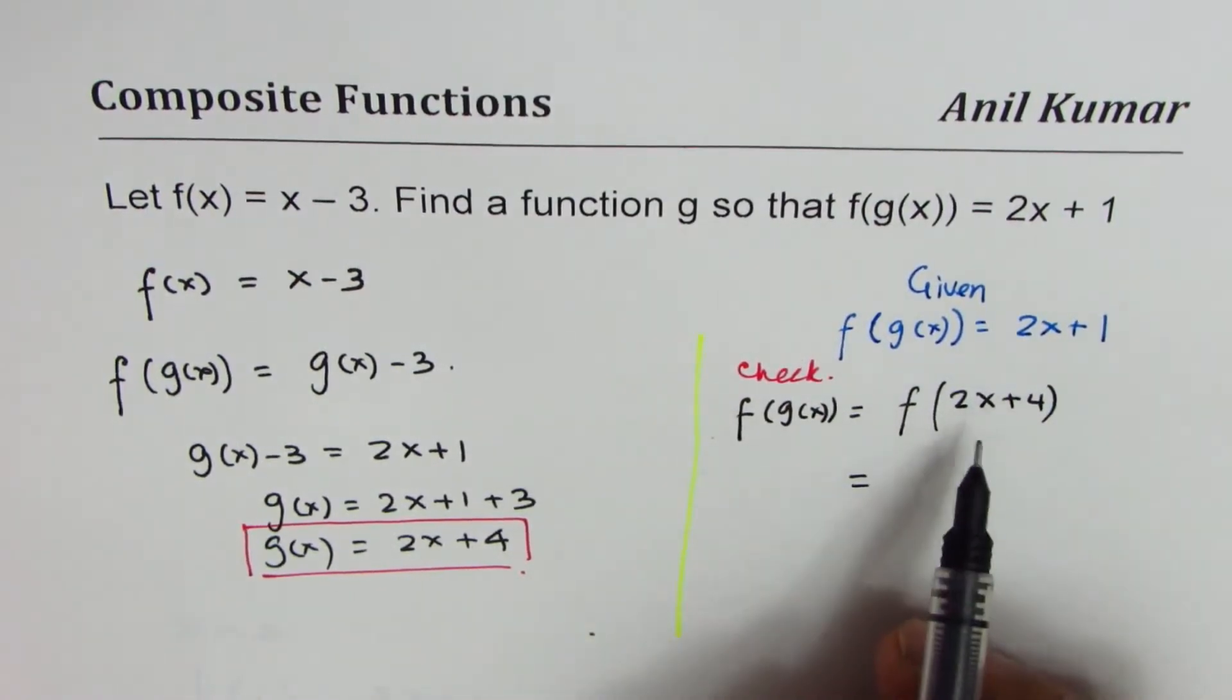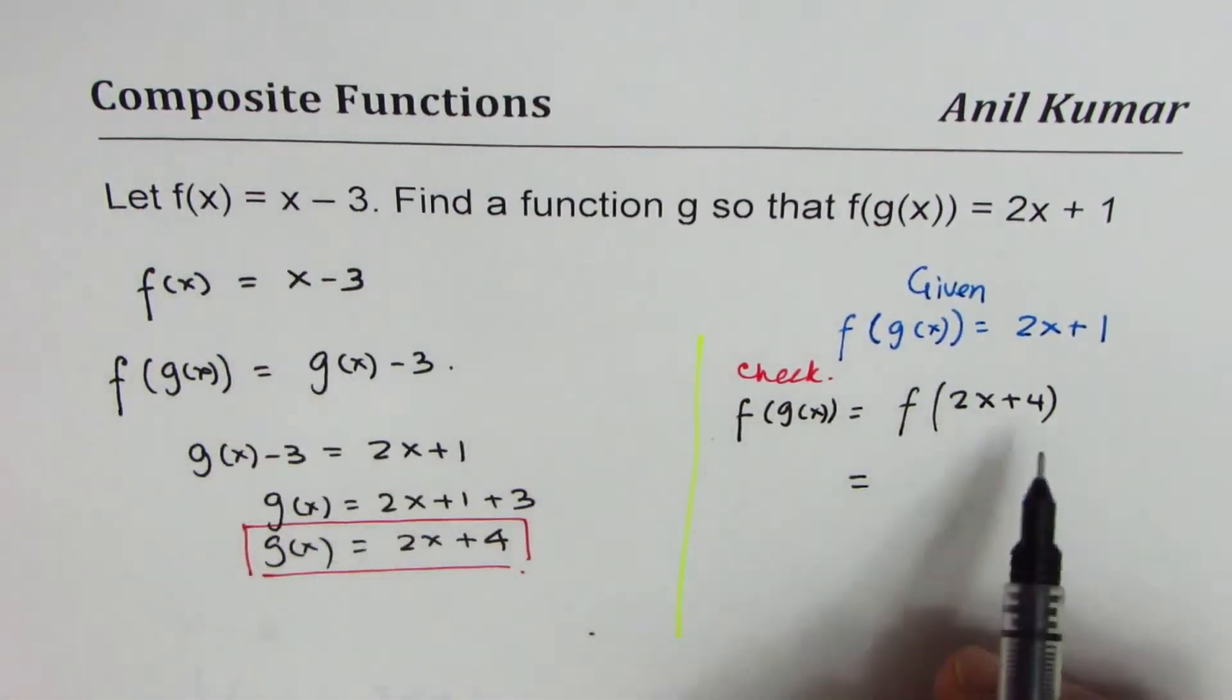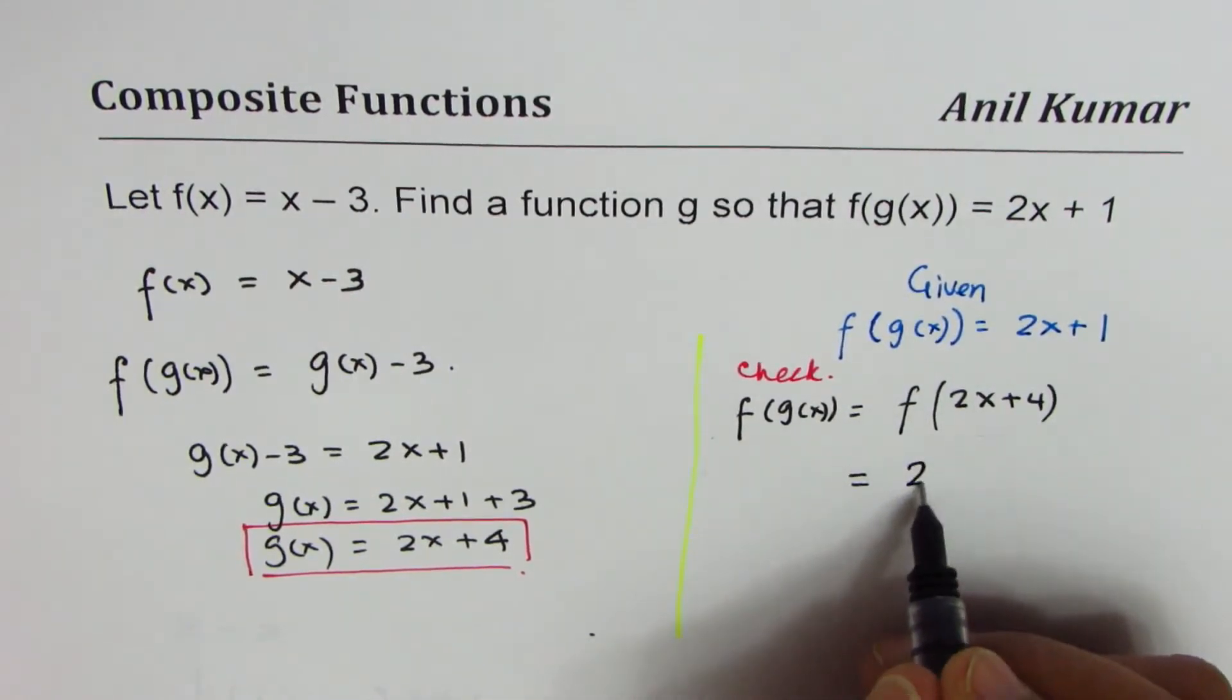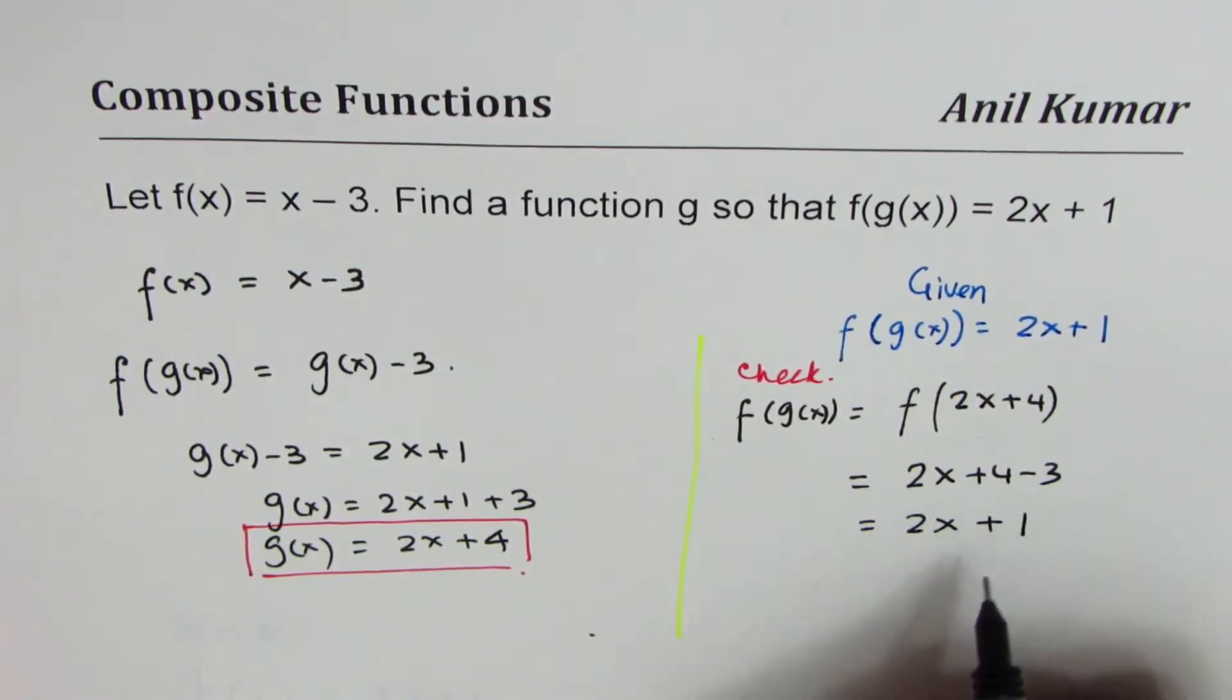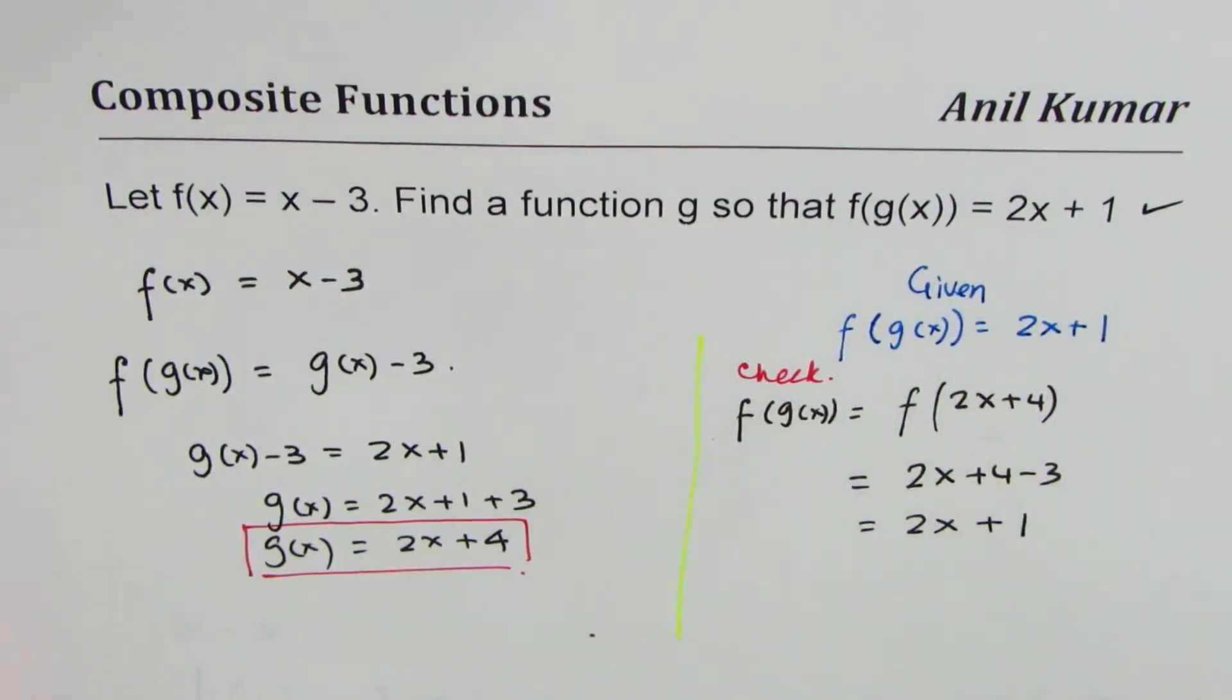That should be equal to... we'll replace this x with 2x + 4, so we get 2x + 4 - 3, which is 2x + 1, correct? Which is given to us. So we found that f(g(x)) is indeed 2x + 1, right? So that is the correct answer.